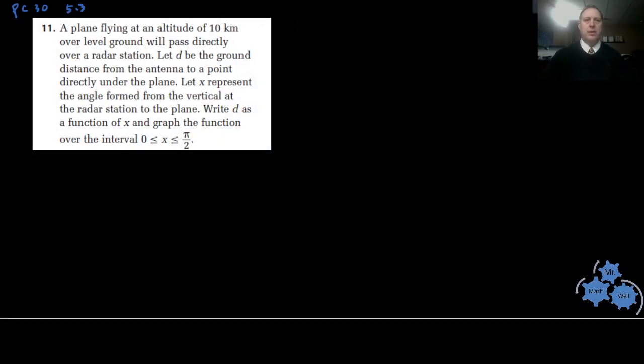We're looking at 5.3 number 11. It says there's a plane flying at an altitude of 10 kilometers over level ground. Let's say we've got level ground here, the plane is over here. It's flying 10 kilometers above level ground, and I'm just going to write it over here for now.